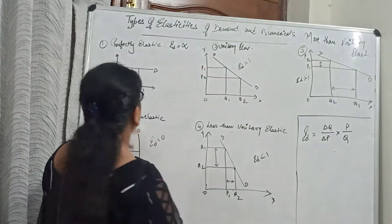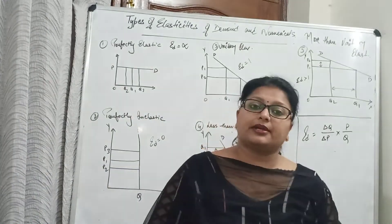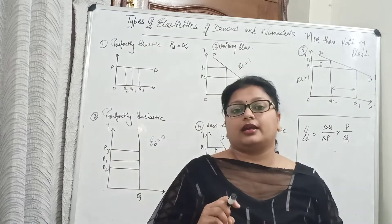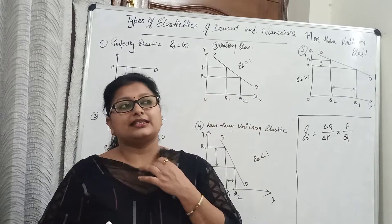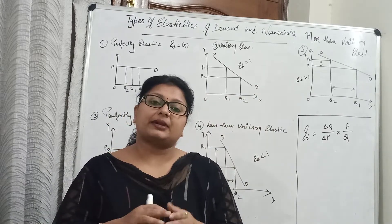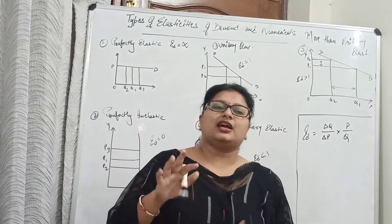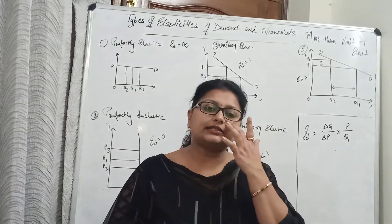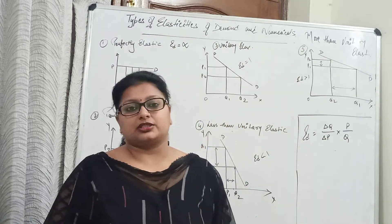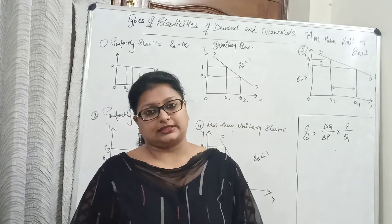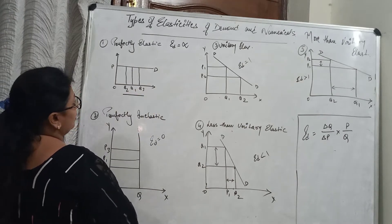Let's discuss them one by one. First of all, perfectly elastic demand. Perfectly elastic demand means that when your price is constant but demand keeps on changing with the passage of time. There is a product whose price does not change, but the demand changes over time. If we talk about luxurious goods, the price does not change but demand changes. In this case, price is constant but the quantity demanded is changing.